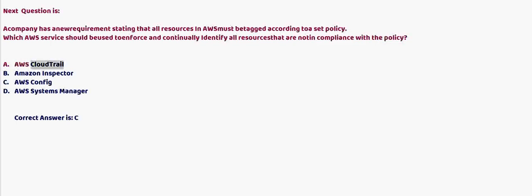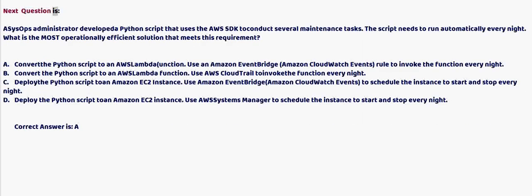Option A: AWS CloudTrail. Option B: Amazon Inspector. Option C: AWS Config. Option D: AWS Systems Manager. The correct answer is C.